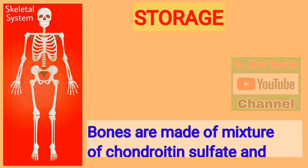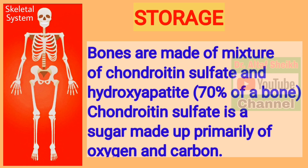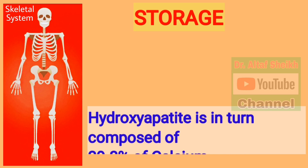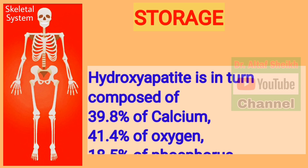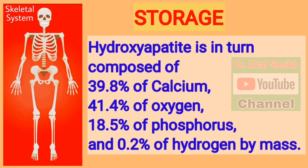Bones are made of a mixture of chondroitin sulfate and hydroxyapatite. Chondroitin sulfate is a sugar made up primarily of oxygen and carbon. Hydroxyapatite is composed of 39.8% calcium, 41.4% oxygen, 18.5% phosphorus and 0.2% hydrogen by mass.